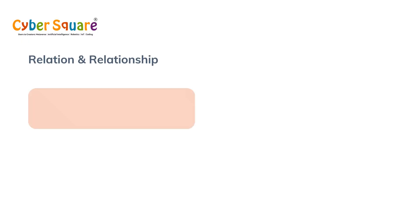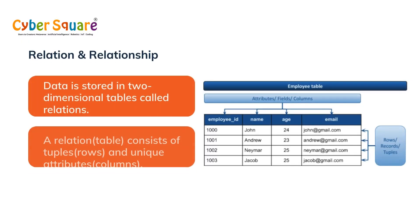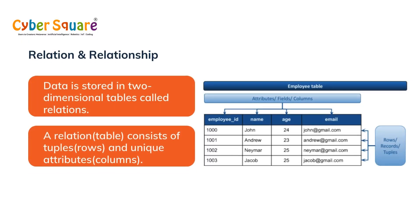Relation and Relationship: A relation simply means a two-dimensional table with rows and columns. A relationship is an association between two or more entities. Rows in a table represent entities, and attributes form the columns of a table.